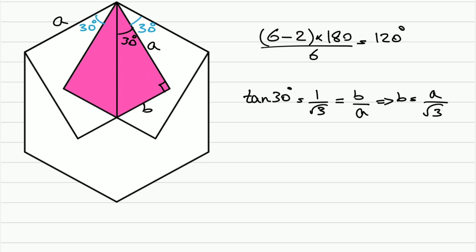So now we can calculate the pink area. It's equal to 2 times one-half times b times a, and that's a squared over square root 3. That's part one. Now we're going to find the area of the hexagon.